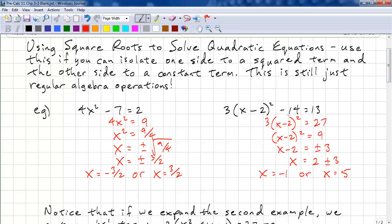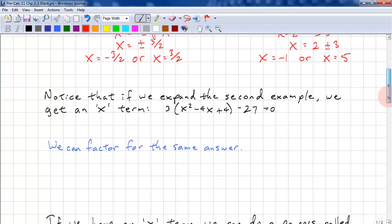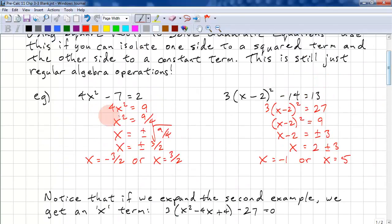These are quadratics, so there's no need to check for extraneous roots. We expect to have two roots for a quadratic. We can actually have one double root, or we can have no real roots. Now, notice that if we expand the second example, we get an x term. Notice here, we don't have an x term, and we can just take the square root.